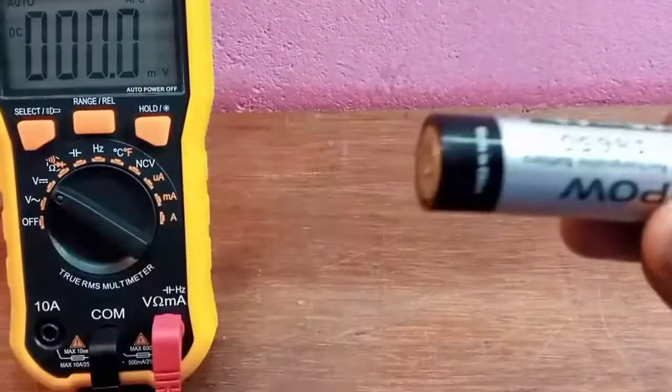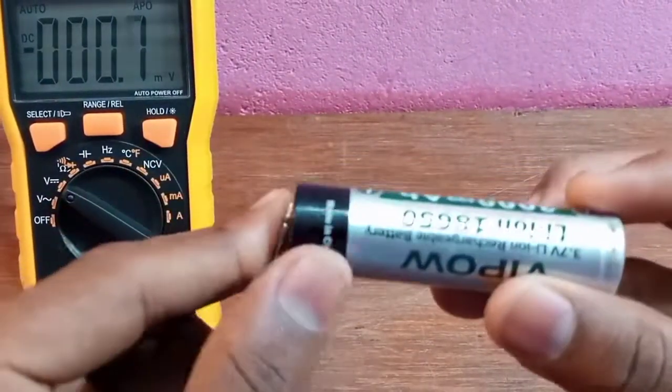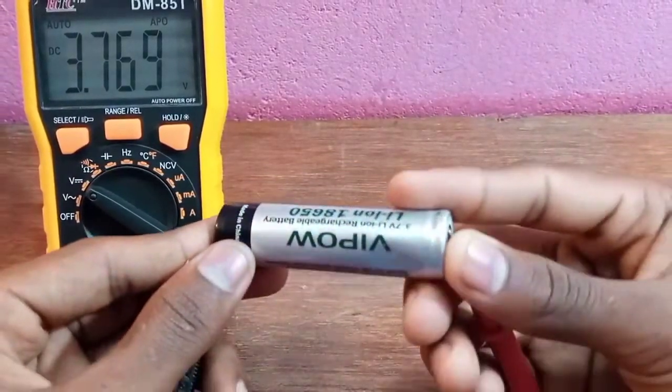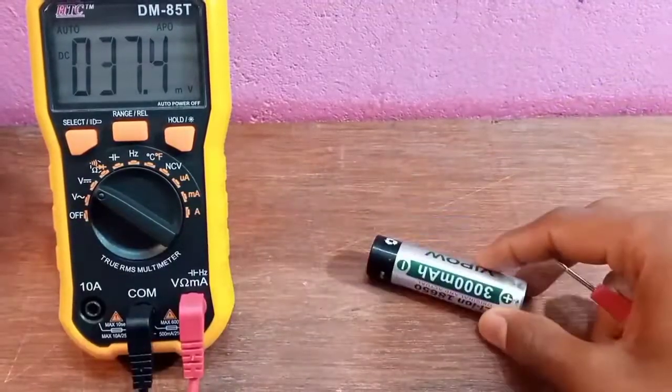3.7V battery, minus pin to common and red wire to plus: 3.769V.